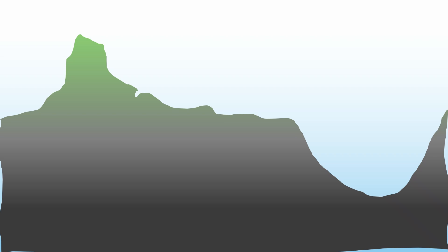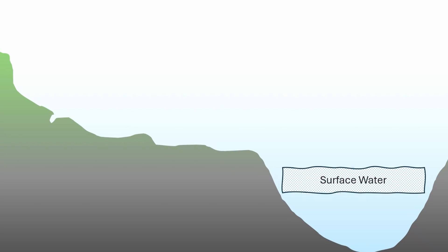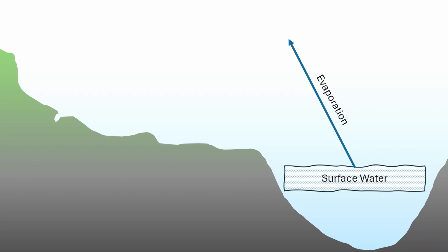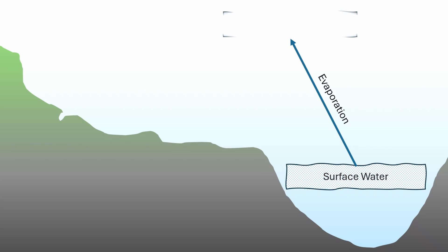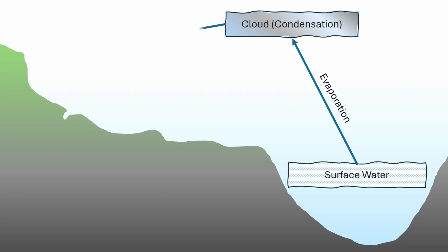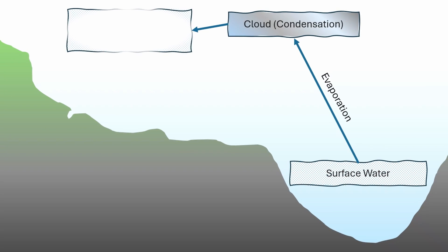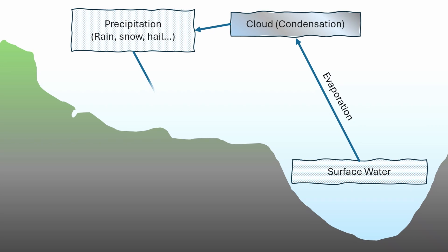So, by now we understand that there are many processes in the water cycle. They are evaporation, condensation, precipitation, runoff and infiltration, groundwater flow, transpiration, sublimation and melting.